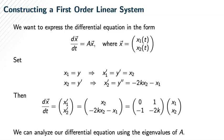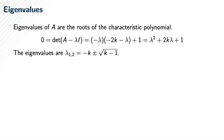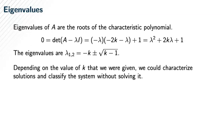What are the eigenvalues of matrix A? They are the roots of the characteristic polynomial. The characteristic polynomial is λ² + 2kλ + 1, which means the roots are -k ± √(k-1). Depending on the values of k, we could get different behaviors in the solutions of our system. We could classify our system and describe the solution set using just the eigenvalues of our matrix.